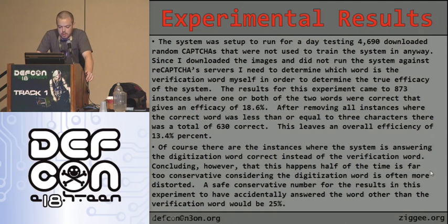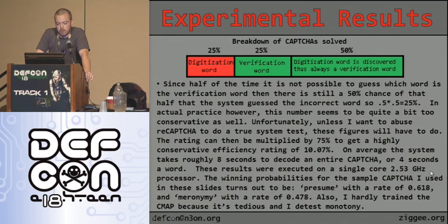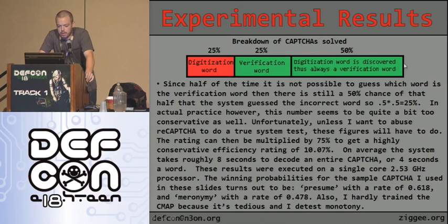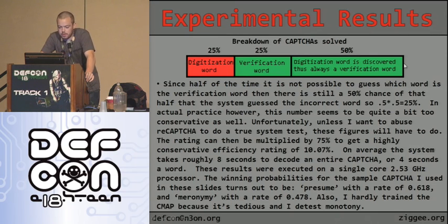Of course, there are instances where the system answers the digitization word correctly instead of the verification word. Assuming that happens half the time is too conservative, since the digitization word is often more distorted. A conservative estimate is that about 25% of correct answers were accidentally the digitization word rather than the verification word. Breaking it down: roughly 25% digitization word correct, 25% verification word correct, and half the time you can determine which is which. Since there's still a 50% chance when you can't tell, it comes out to about 25%. Applying that conservative correction to the 13% efficiency rate yields approximately 10% — and about 3% of the time it gets the digitization word.